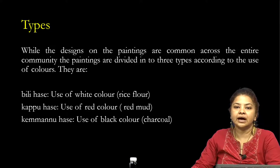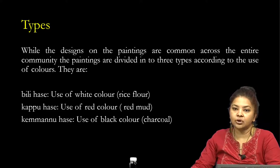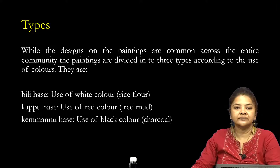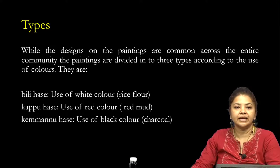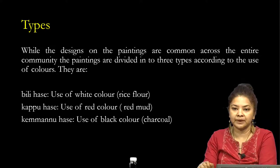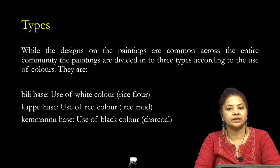While the design and painting are common across the entire community, the paintings are divided into three types according to the use of color. They are: Bilihase — use of white color derived from rice flour; Kapuhase — use of red color derived from red mud; and Kemanuhase — use of black color derived from charcoal. Based on the colors used, the paintings can be divided into these three types.